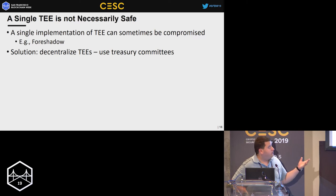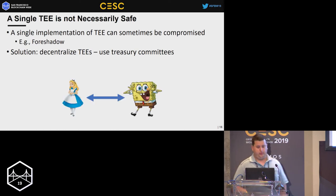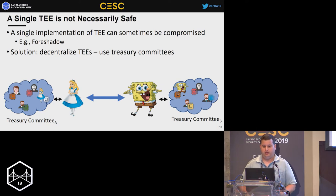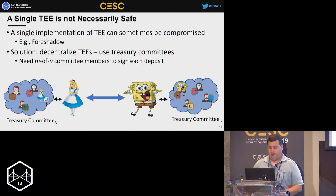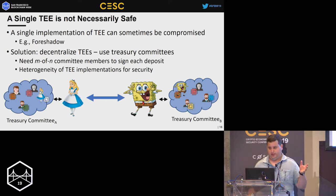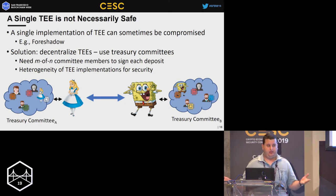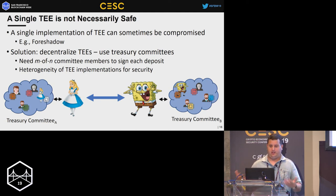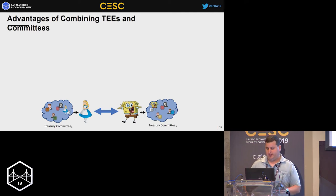The solution we thought is nice is to decentralize TEEs using treasury committees. Instead of one TEE on each side, we use a committee of TEEs. We take advantage of multisig on almost all blockchains, requiring M-of-N committee members to sign each transaction. This allows heterogeneity of TEE implementations — you can have a committee of Intel SGX, TrustZone, and Keystone. To break a committee of two-out-of-three, you'd need to break two TEE implementations instead of one, which is more secure since each attack requires time and money. Combining TEEs and committees gives many advantages.